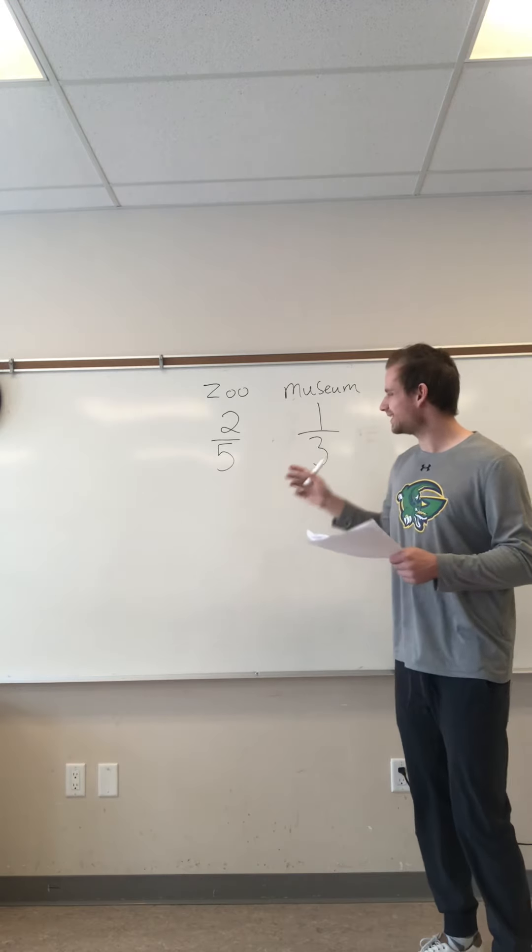We're going to do what we did earlier in this assignment — find our common denominator between five and three. Let's list out our multiples for five: five, ten, fifteen, twenty. And for three: three, six, nine, twelve, fifteen.